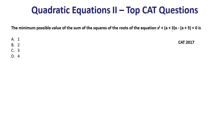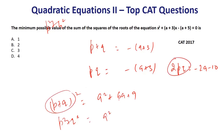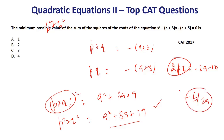Next: find the minimum value of the sum of squares of roots. Let roots be p and q. Sum p + q = -a + 3, product pq = -a + 5. Then p² + q² = (p+q)² - 2pq = a² + 6a + 9 - (-2a + 10) = a² + 8a + 19. Converting to perfect square form: (a + 4)² + 3. The minimum value is 3. Answer is option C.